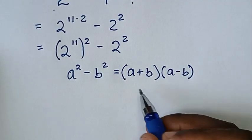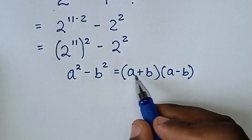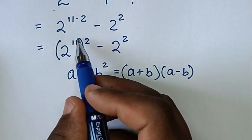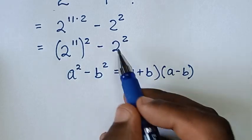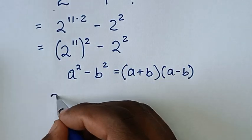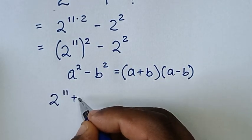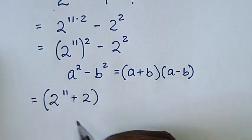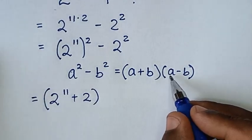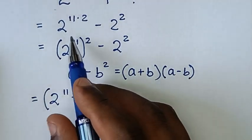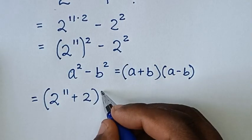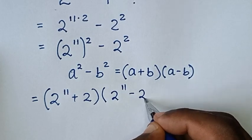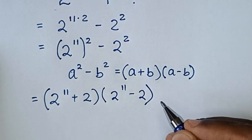Then from here we will apply this form of a plus b — it will be 2 power of 11 plus 2, bracket. Then times a minus b — it will be 2 power of 11 minus 2, bracket.